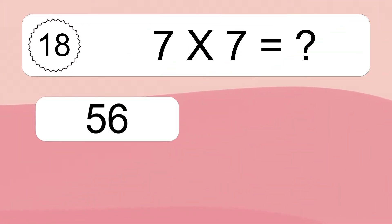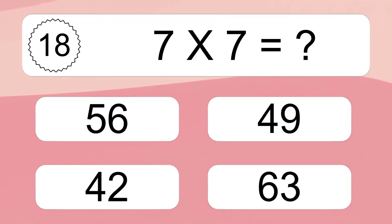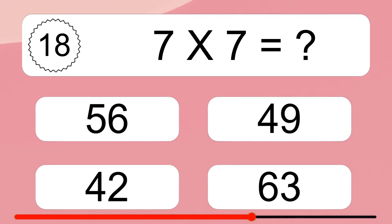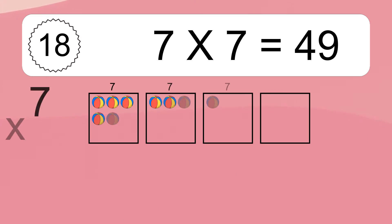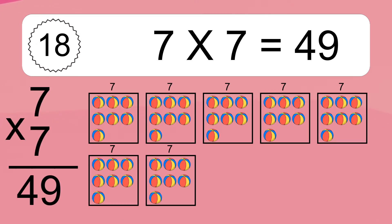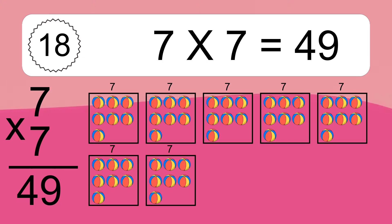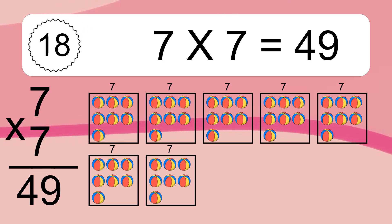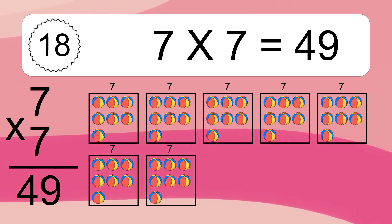7 times 7 equals what? 7 times 7 equals 49. We have 7 boxes, and each box has 7 colorful balls inside. If you count all the balls in all the boxes together, you will have 7 times 7 balls. This equals 49 balls.